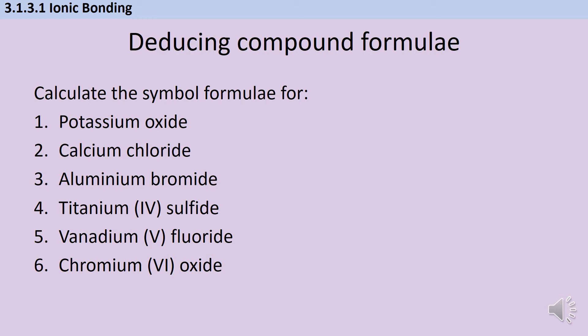Potassium oxide is K2O because potassium in group 1 has single positive charge whereas oxide in group 6 has 2- charge, so you need 2 potassiums for every 1 oxide ion. Calcium chloride is CaCl2. Aluminium bromide is AlBr3. Titanium(IV) sulfide: the 4 tells me titanium produces a 4+ ion, and sulfide in group 6 is 2-, so I need 2 sulfide ions for every 1 titanium ion.